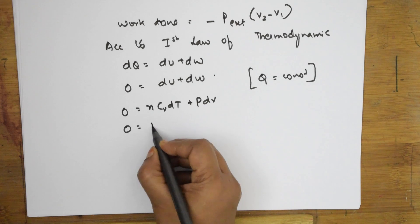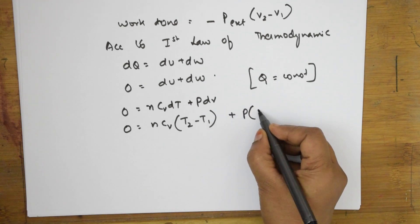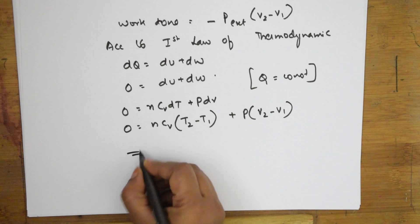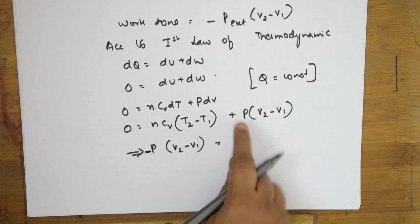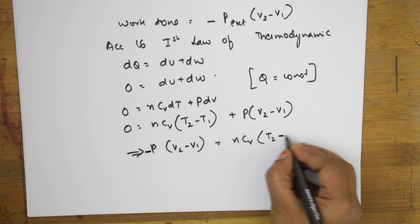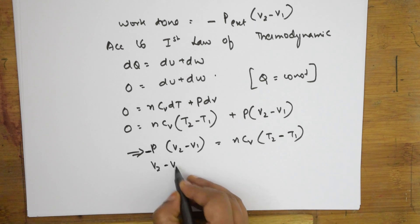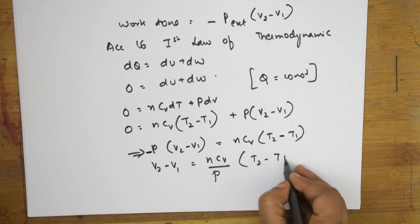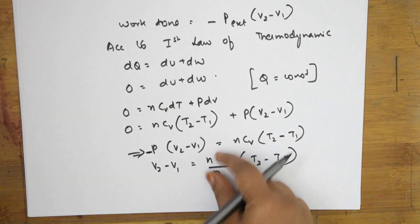So zero equals n·Cv·(T2 minus T1) plus p·(V2 minus V1). Rearranging, minus p times (V2 minus V1) equals n·Cv·(T2 minus T1). Therefore, (V2 minus V1) equals n·Cv divided by p, times (T2 minus T1). We can then substitute this value of (V2 minus V1) into our work done equation.